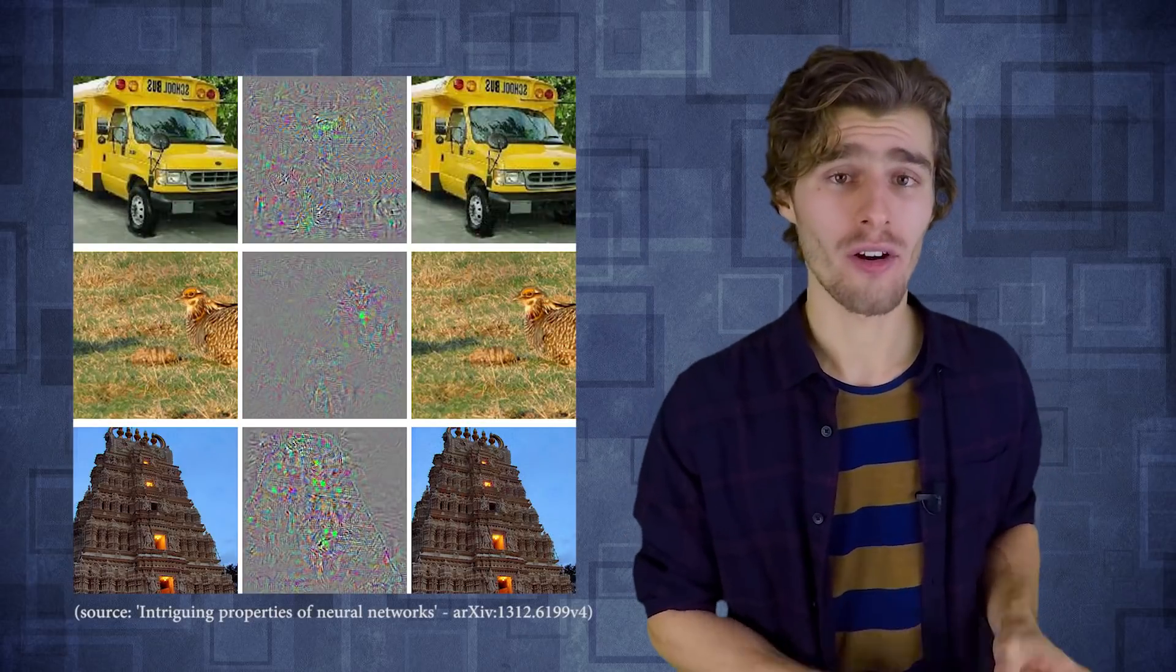So let's look at some striking examples that were generated using the fast gradient sign method. So here all three images on the left are correctly classified by the deep neural network. In the middle we can see the gradient perturbations that we're going to add to the images, and then on the right side we see the resulting adversarial examples that look visually identical but that the neural network misclassifies with high certainty as being an ostrich.